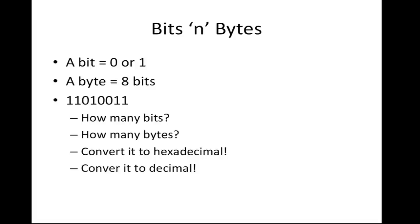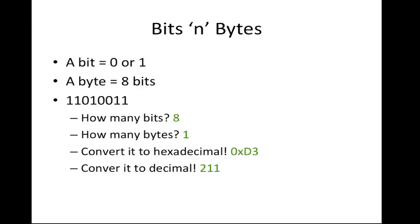To convert to decimal, we treat each position as a power of 2: 1, 2, 4, 8, 16, and so on from right to left, multiplying each digit by the corresponding power of 2. Remember that for hexadecimal, we denote these numbers with 0x at the beginning so we don't confuse them with decimal numbers.